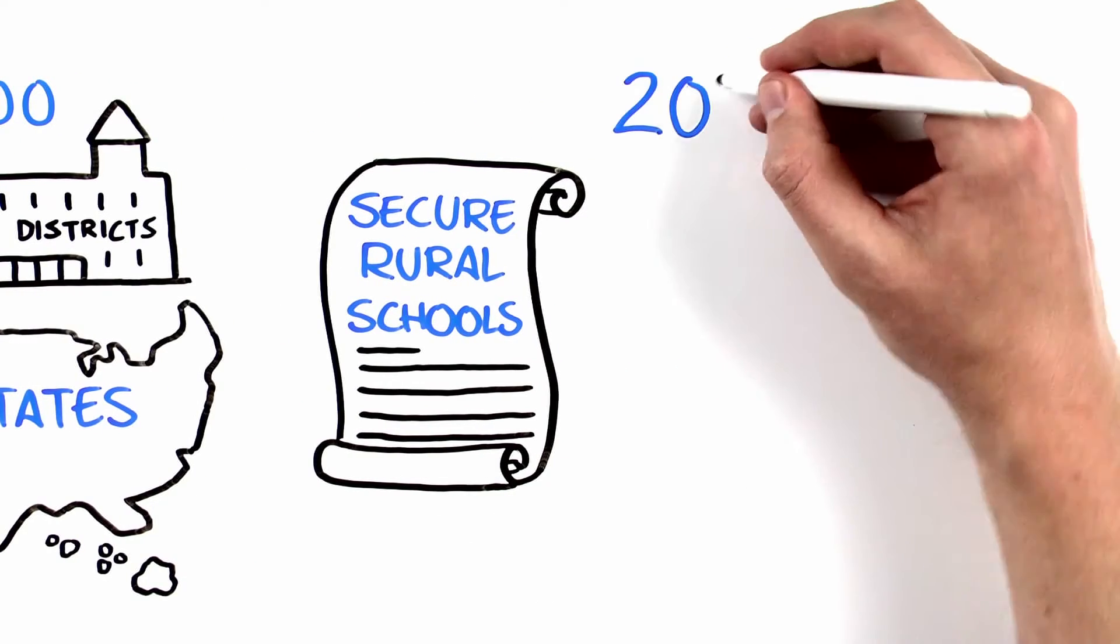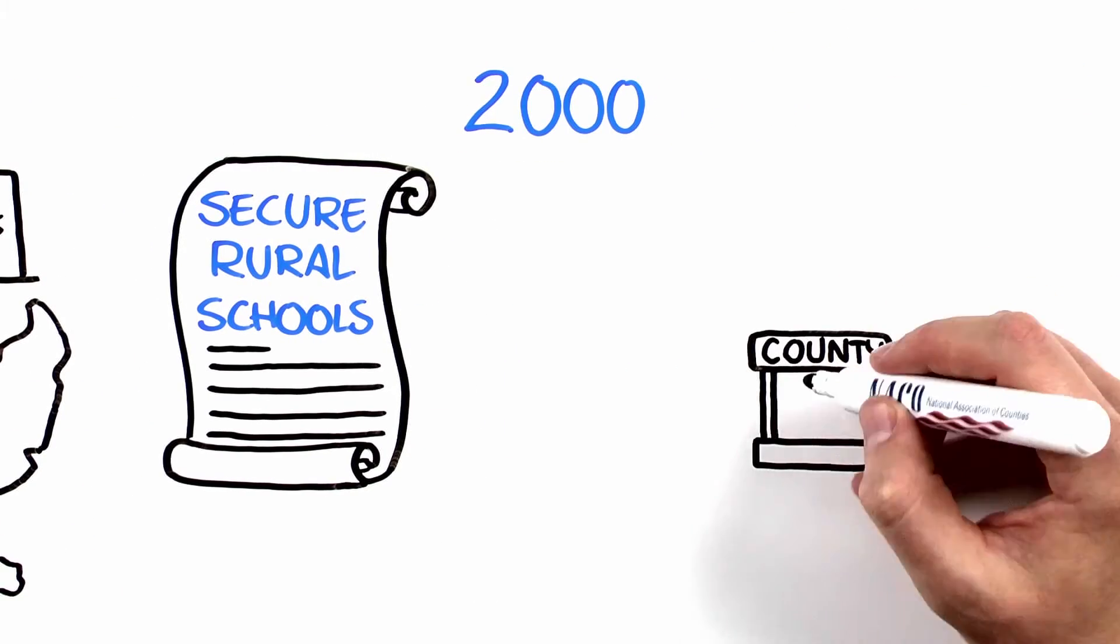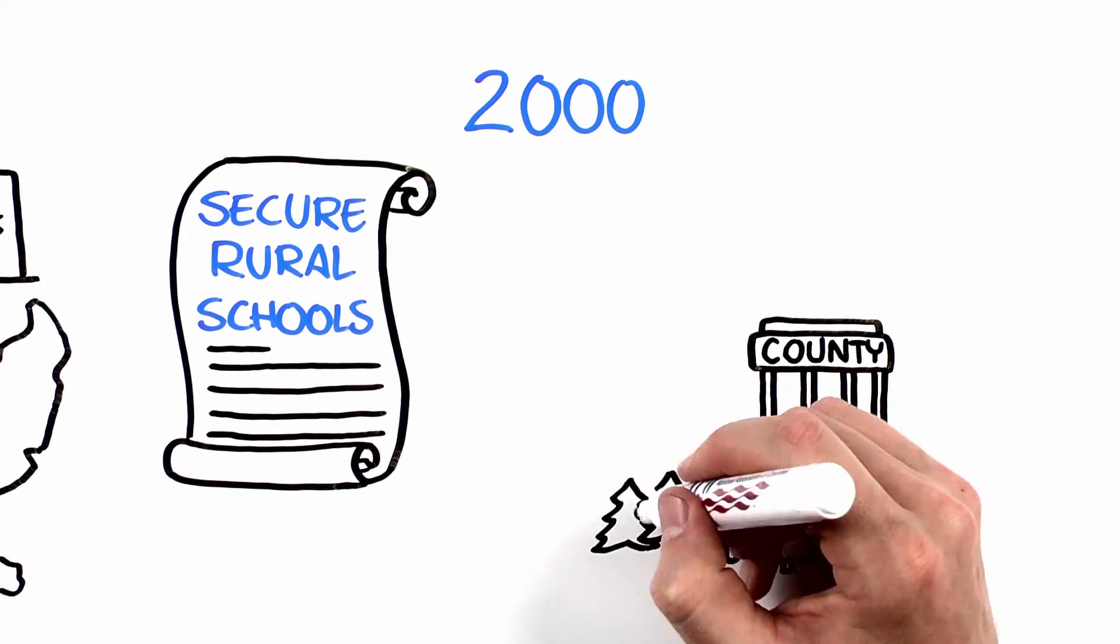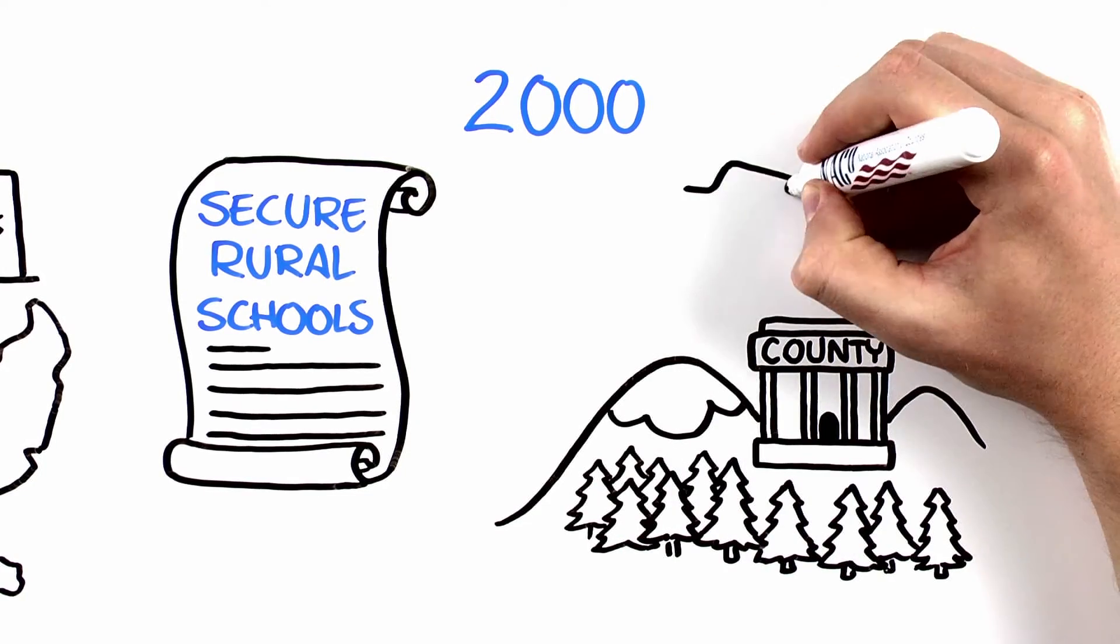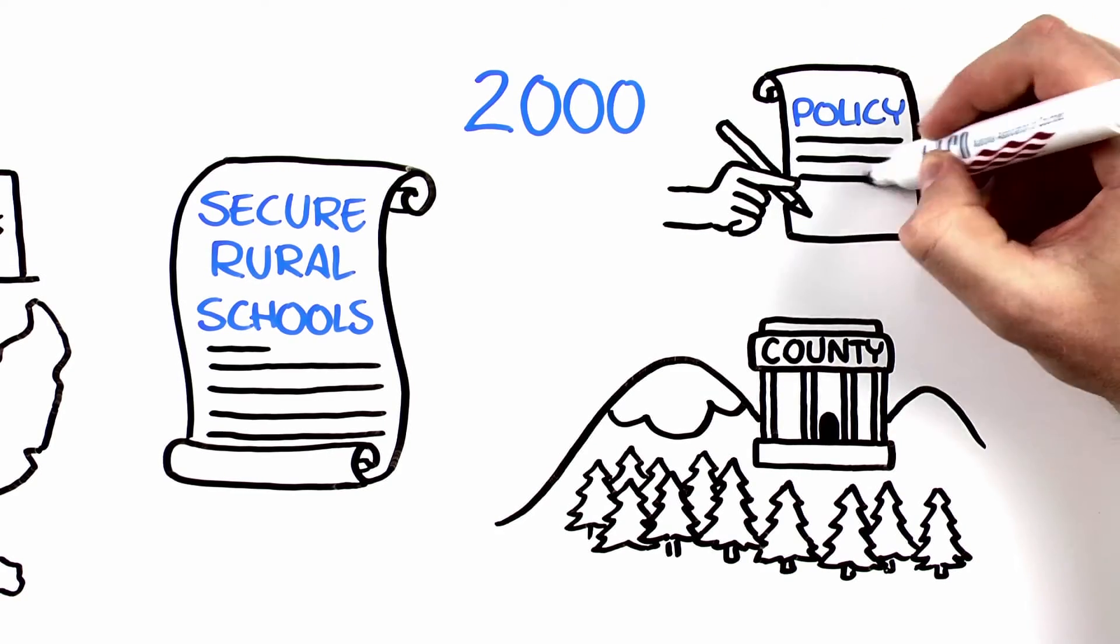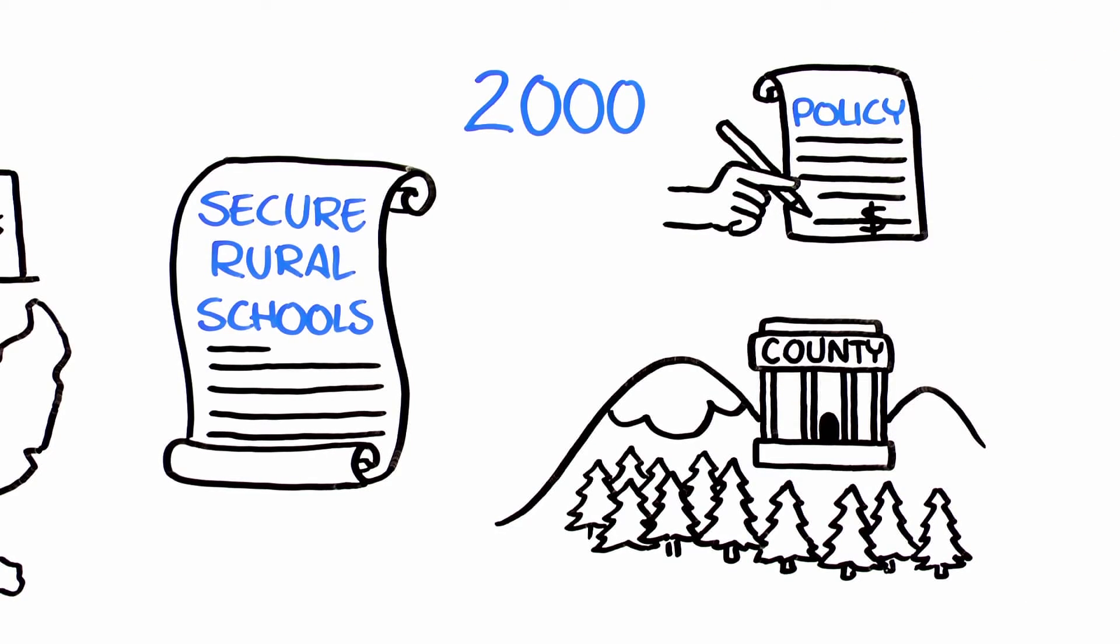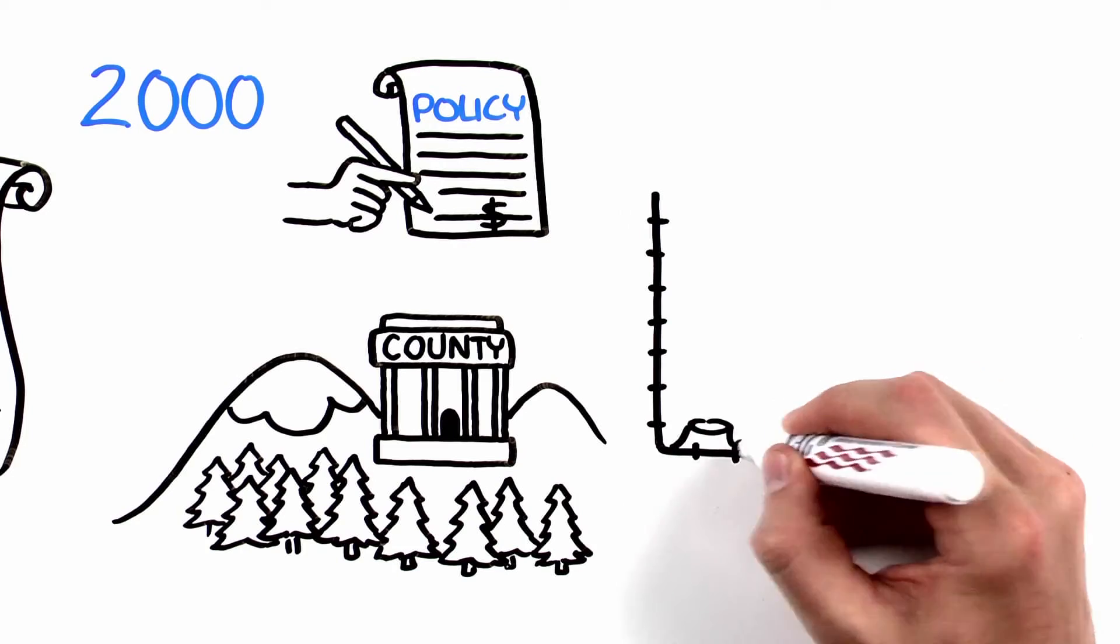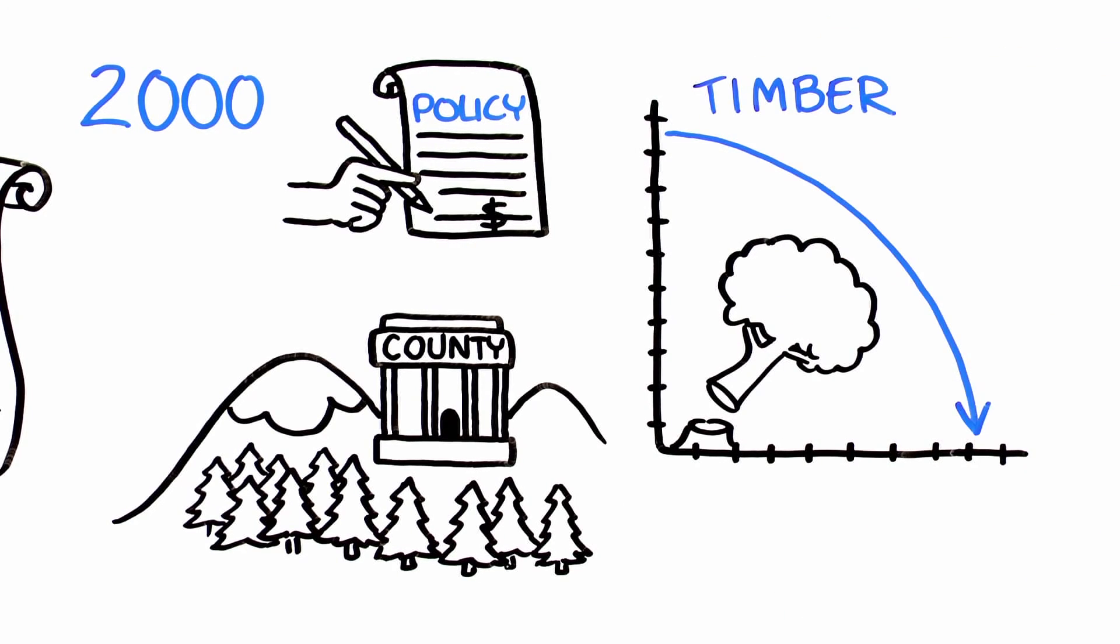SRS was established in the year 2000 to provide stability for forest counties and school districts, many of whom are facing immense financial hardships due to changes in federal environmental policies that have resulted in sharp declines in local revenue from federal timber harvests.